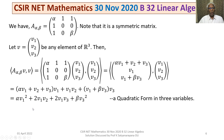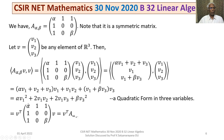This is a quadratic form in three variables v₁, v₂, v₃. We can write it as V^T · A(α,β) · V, where A(α,β) is the matrix of the quadratic form with rows (α, 1, 1), (1, 0, 0), (1, 0, β). This is the matrix representation of the quadratic form.